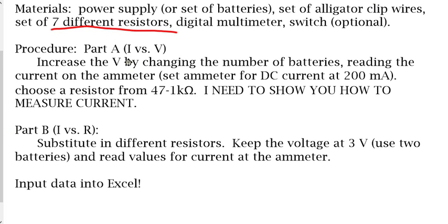For Part A, you're going to be measuring current and voltage. We're going to be changing the voltage by changing the number of batteries. You'll need to measure the voltage of the batteries. You'll be reading the current on the ammeter, which